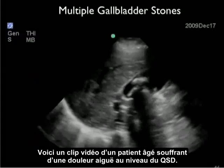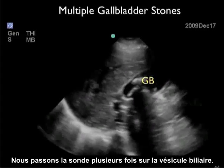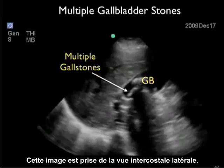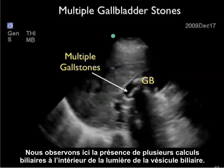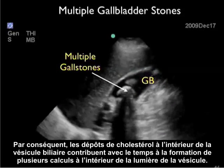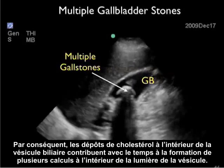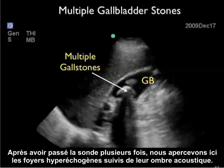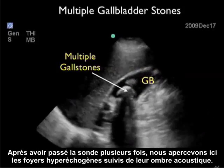Here's a video clip taken from an elderly patient with acute right upper quadrant pain. We're scanning back and forth through the gallbladder from that lateral intercostal view. We see the presence of multiple shadowing gallstones within the lumen of the gallbladder — the end result of cholesterol deposition forming multiple stones. As we scan back and forth, we can see the multiple hyperechoic foci with posterior acoustic shadowing.